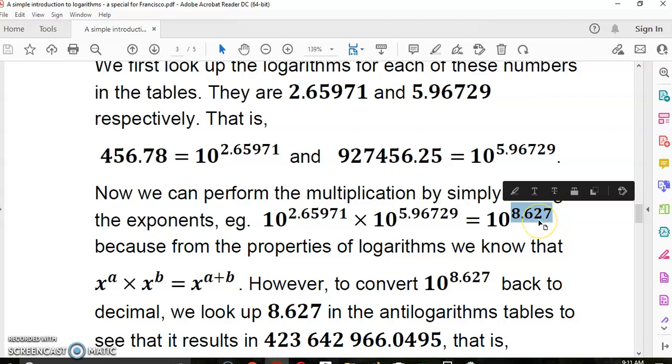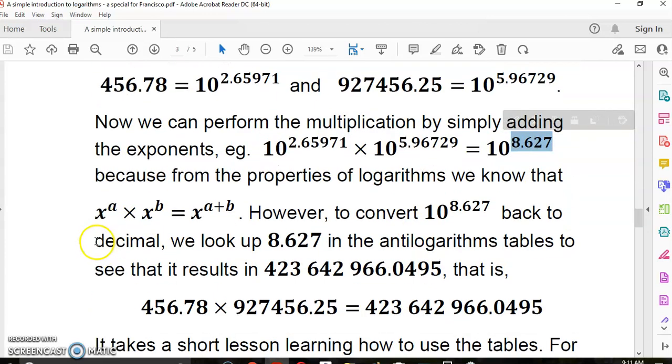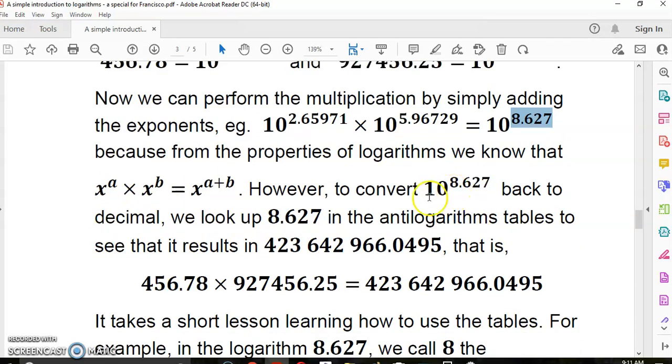Then we can say that in order to multiply them, it's this term multiplied by this term. Now this becomes very easy because instead of multiplying these two big numbers, we just add the exponents. And we have a new logarithm, 8.627.